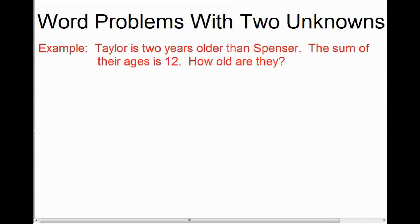The next thing we're going to talk about in our Algebra Unit is solving word problems with two unknowns algebraically, so using algebra. To explore this concept, we're going to jump right into an example. In this example, we have a situation where Taylor is two years older than Spencer, and we're given another piece of information that the sum of their ages is 12.